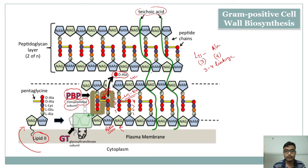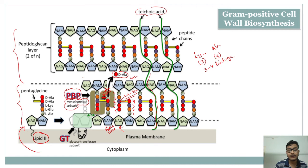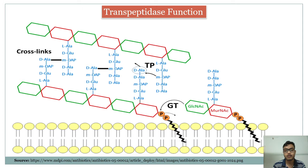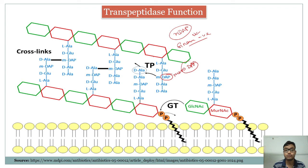Once this 3-4 linkage occurs, teichoic acid comes into play. Teichoic acid binds with the NAG-NAM components and helps hold the peptidoglycan layers together. When two peptidoglycan layers come close together, teichoic acid holds them together, ultimately forming a thicker peptidoglycan layer. In gram-negative bacteria, meso-diaminopimelic acid is present instead of lysine.